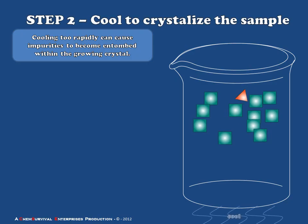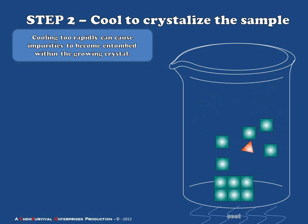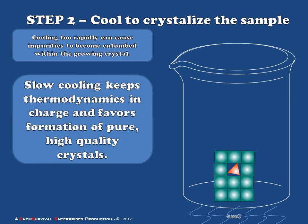So let's cool rapidly and see. Notice that as we cool this mixture rapidly, impurities which might otherwise fall off the face and not be entombed in a crystal are instead trapped because the face is growing so rapidly that new molecules of the desired compound come in and essentially encapsulate it at the surface. The result of this is an impure crystal and this is not the goal of recrystallization. Therefore, slow cooling is essential during the recrystallization process because it keeps thermodynamics in charge, favors the formation of pure high quality crystals, which we can use then for either further experimentation or identification by melting point, which will be the topic of our next segment.